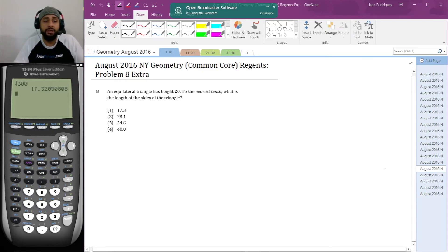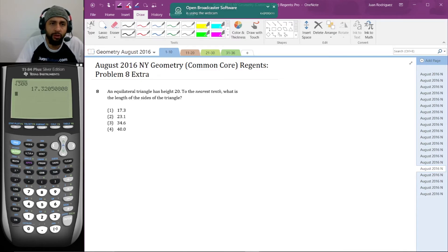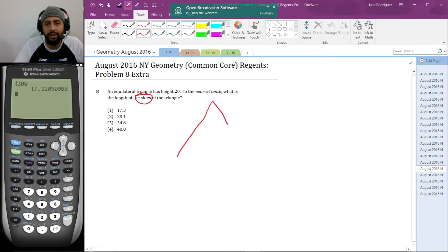Now, an equilateral triangle has a height of 20. To the nearest tenth, what is the length of the sides of the triangle? Let's see if we can do the same thing as before. Draw a diagram—you should draw a diagram. We want the length of the sides. I don't want you to hear me say I'm going to draw a diagram and then get the idea to draw one. Draw one if the diagram is not given to you.